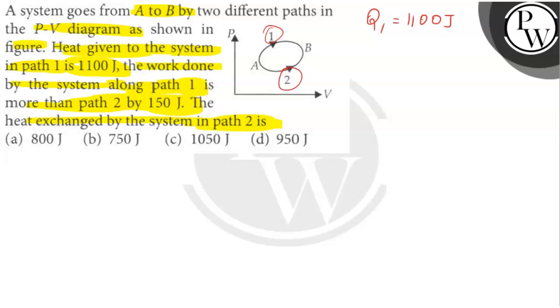So Q1 is 1100 joules and then heat exchanged by the system in path 2, which means Q2 value is what we need to determine. The first law of thermodynamics is Q equals U plus W.